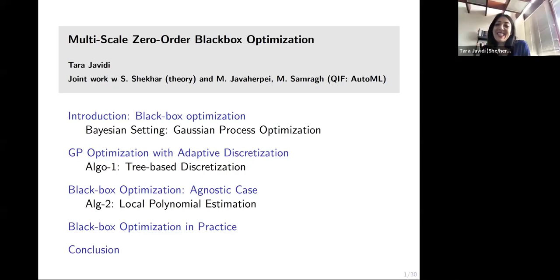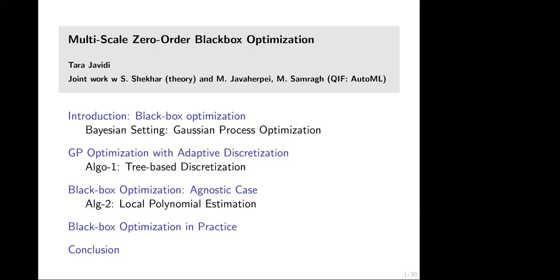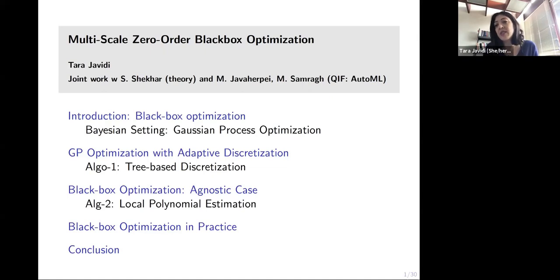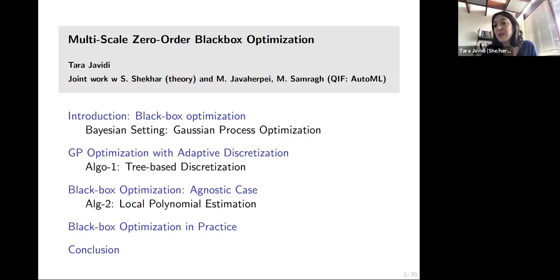Thank you, Waheed. Thank you, Joe, for hosting me. The work I'm going to talk about is primarily the theoretical aspects, which was done by my PhD student Shekhar Shubanshu, who is going to be a postdoc soon at CMU — somebody to have on the radar. I'm also going to talk about the application of this theory to the problem of designing or compressing neural networks on embedded devices, done in collaboration with my colleague and her PhD students, Mojan Jawahirpeh and Mohamed Samra.